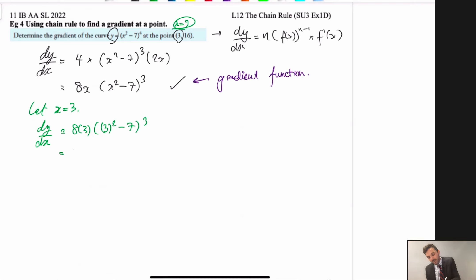Now 8 times 3 is 24, lots of 9 minus 7 all cubed. 24 times by 2 cubed becomes 24 times by 8, and that becomes 192.